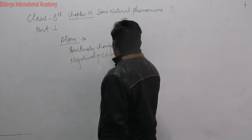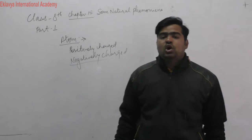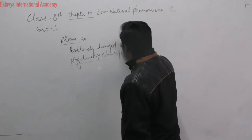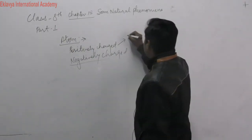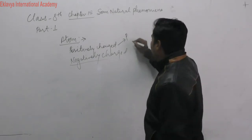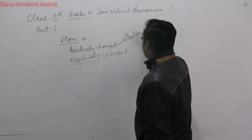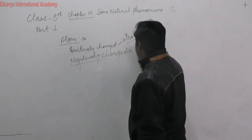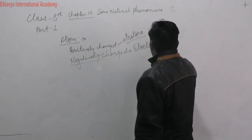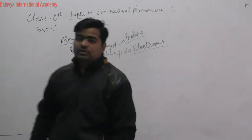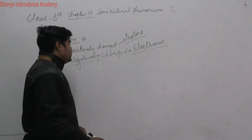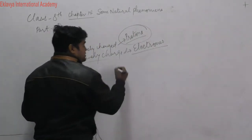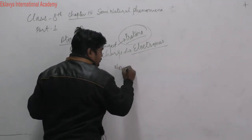The positively charged particles present in the nucleus of any atom are known as protons. The negatively charged particles are known as electrons. One more particle found in the atom, present along with the protons in the nucleus, is known as the neutron.